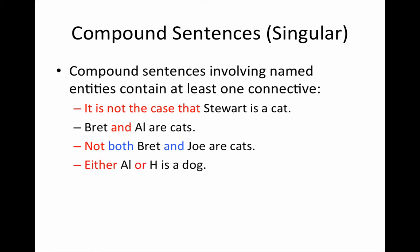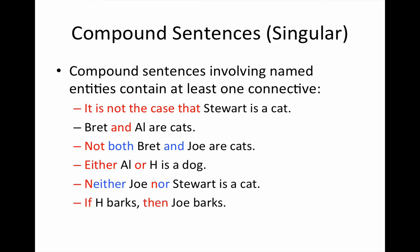Here's another example of a compound singular sentence: 'Brett and Al are cats.' The 'and' conjoins 'Brett is a cat' with 'Al is a cat.' 'Not both Brett and Joe are cats' is a doubly compounded sentence — the atomic sentences 'Brett is a cat' and 'Joe is a cat' are combined and then the whole thing is negated. Another example: 'Either Al or H is a dog' — 'or' brings together by way of disjunction 'Al is a dog' with 'H is a dog.' 'Neither Joe nor Stewart is a cat' is also doubly compounded — the two atomic sentences are brought together by 'or' and then negated. Finally, 'If H barks, then Joe barks' — a conditional compound sentence.